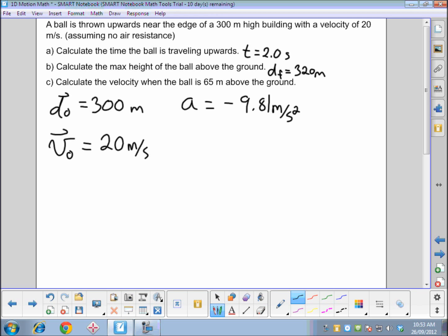Our final position in this problem is df = 65 meters above the ground. Remember that everything we're measuring in terms of our position is relative to ground. Ground would be zero. So if this ball landed on the ground, my final position, my final displacement there would be zero meters. We're trying to calculate vf.